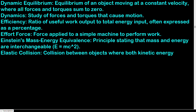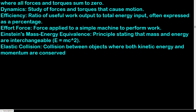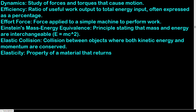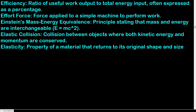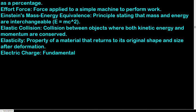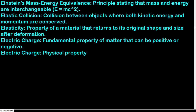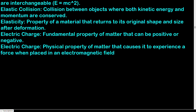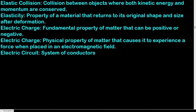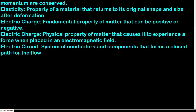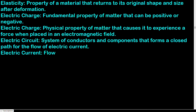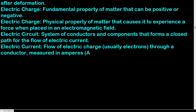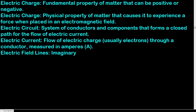Einstein's mass-energy equivalence: principle stating that mass and energy are interchangeable; E = mc². Elastic collision: collision between objects where both kinetic energy and momentum are conserved. Elasticity: property of a material that returns to its original shape and size after deformation. Electric charge: fundamental property of matter that can be positive or negative, causing a force when placed in an electromagnetic field. Electric circuit: system of conductors and components forming a closed path for the flow of electric current. Electric current: flow of electric charge through a conductor, measured in amperes.